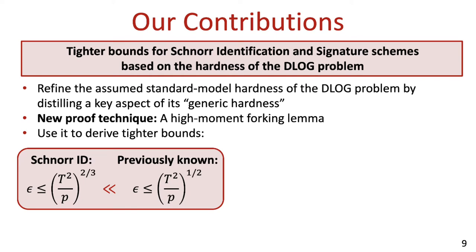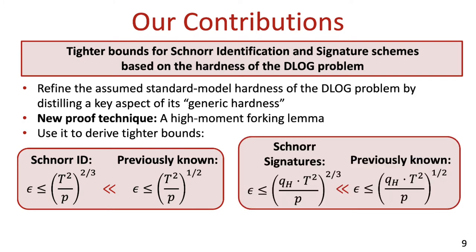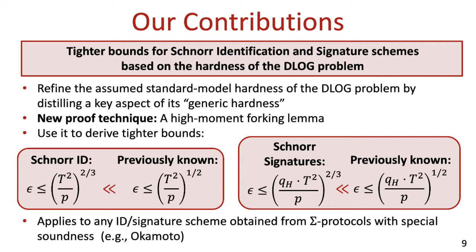For Schnorr's ID scheme, we prove that any impersonator that runs in time t breaks the security of the scheme with probability at most (t squared over p) raised to the power of 2/3, which improves upon the previously known bound of (t squared over p) raised to the power of 1/2. Similarly, for Schnorr's signatures, we prove that any forger that runs in time t breaks the security of the scheme with probability at most (q_H times t squared over p) raised to the power of 2/3, where q_H is the number of random oracle queries issued by the attacker. This improves upon the previously known bound of (q_H times t squared over p) raised to the power of 1/2. Our approach can also be generalized to apply to any ID or signature scheme obtained from a sigma protocol with special soundness, such as the Okamoto ID and signature schemes.